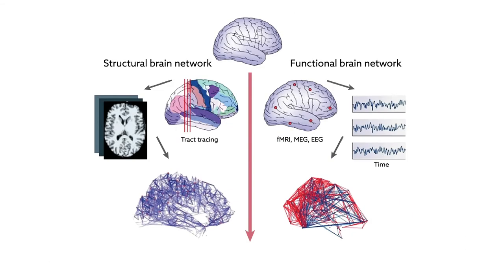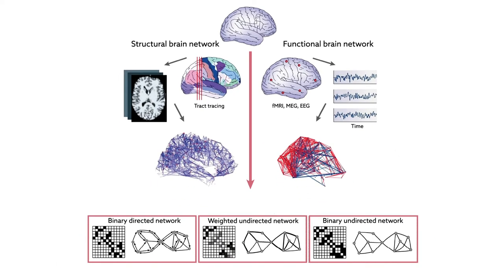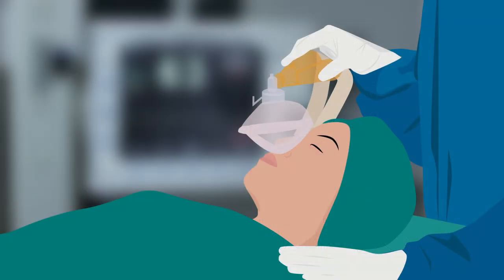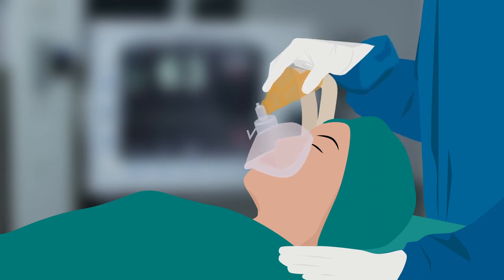Such insight has the potential to enhance scientific understanding of anesthetic drug actions. It's possible that loss of consciousness, recovery of consciousness, and specific altered cognitive functions could be predicted by looking at network architectures and their dynamic responses to anesthetic interventions. These predictions, in turn, could contribute to new ways of controlling neurologic function in the operating room.